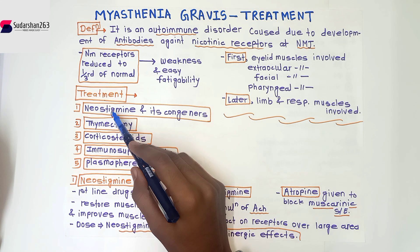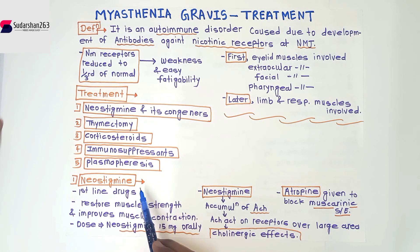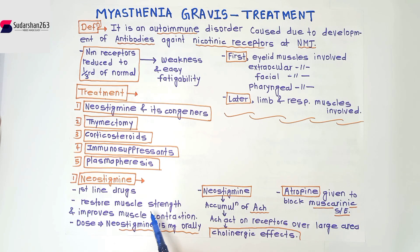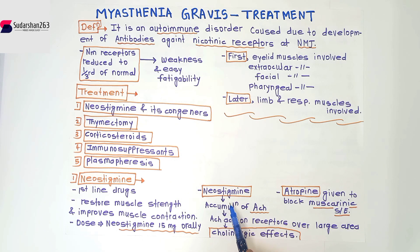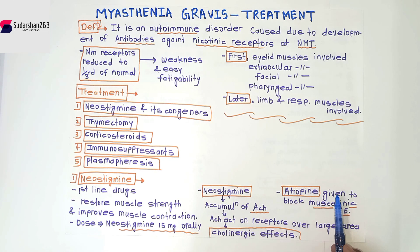First is neostigmine and its congeners. Neostigmine are the first line drugs in the treatment of myasthenia gravis. They restore muscle strength and improve muscle contraction. The dose of neostigmine is 15 mg orally. Neostigmine causes accumulation of acetylcholine, which acts on receptors over a large area, resulting in cholinergic effects and improvement in myasthenia gravis.